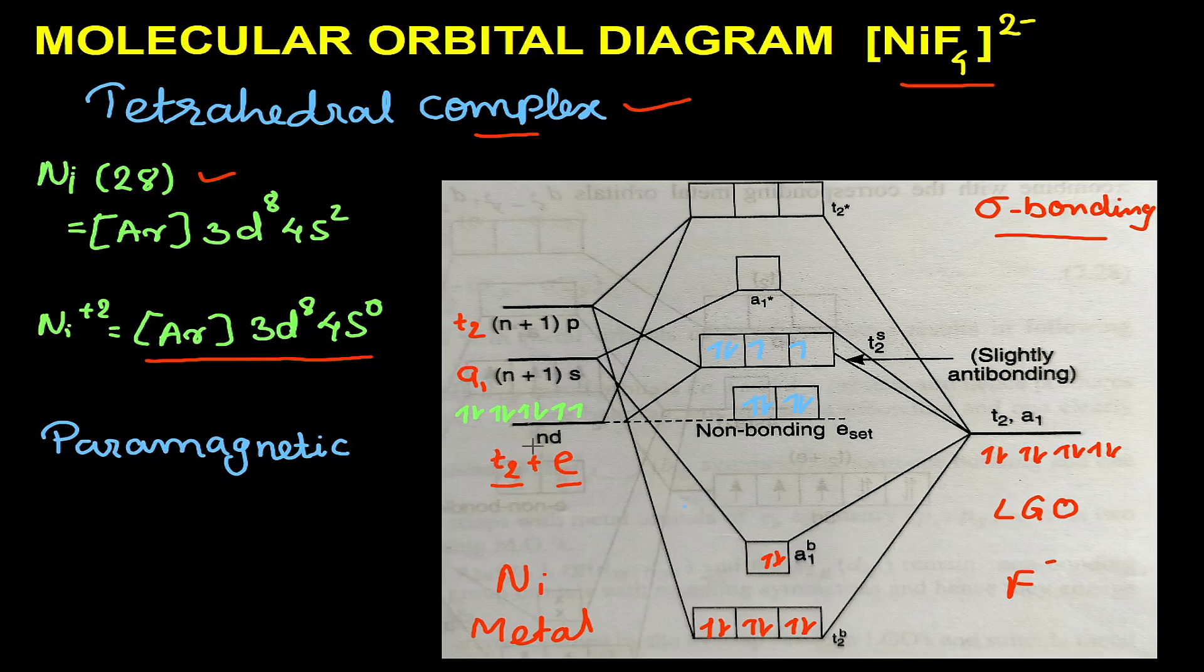We will only be using the Mulliken symbols. The d orbital splits into t₂ and e. Similarly, the s orbital Mulliken symbol is a₁, and the p orbital Mulliken symbol for tetrahedral complex is t₂. The ligand group orbitals are a₁ and t₂.